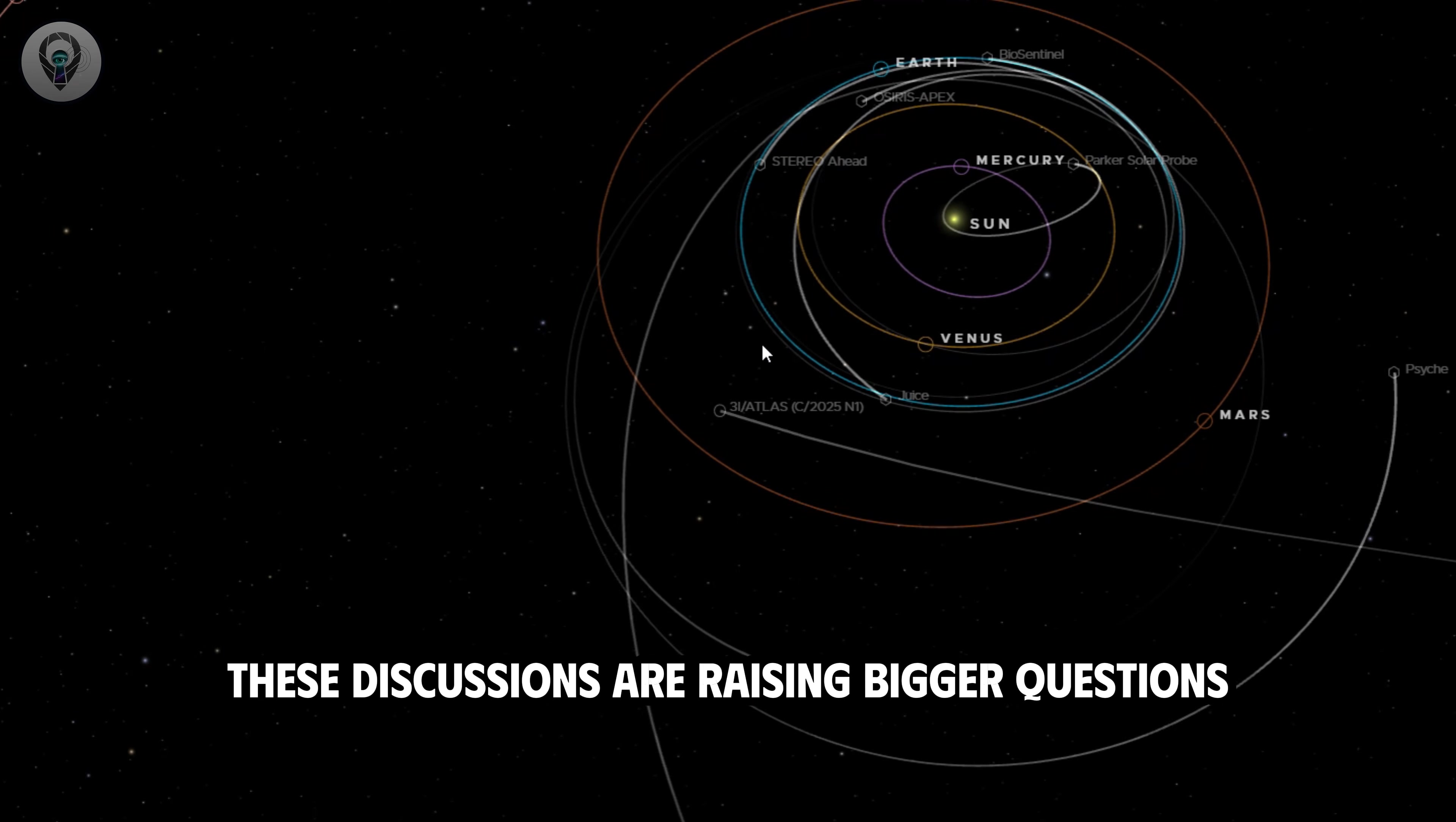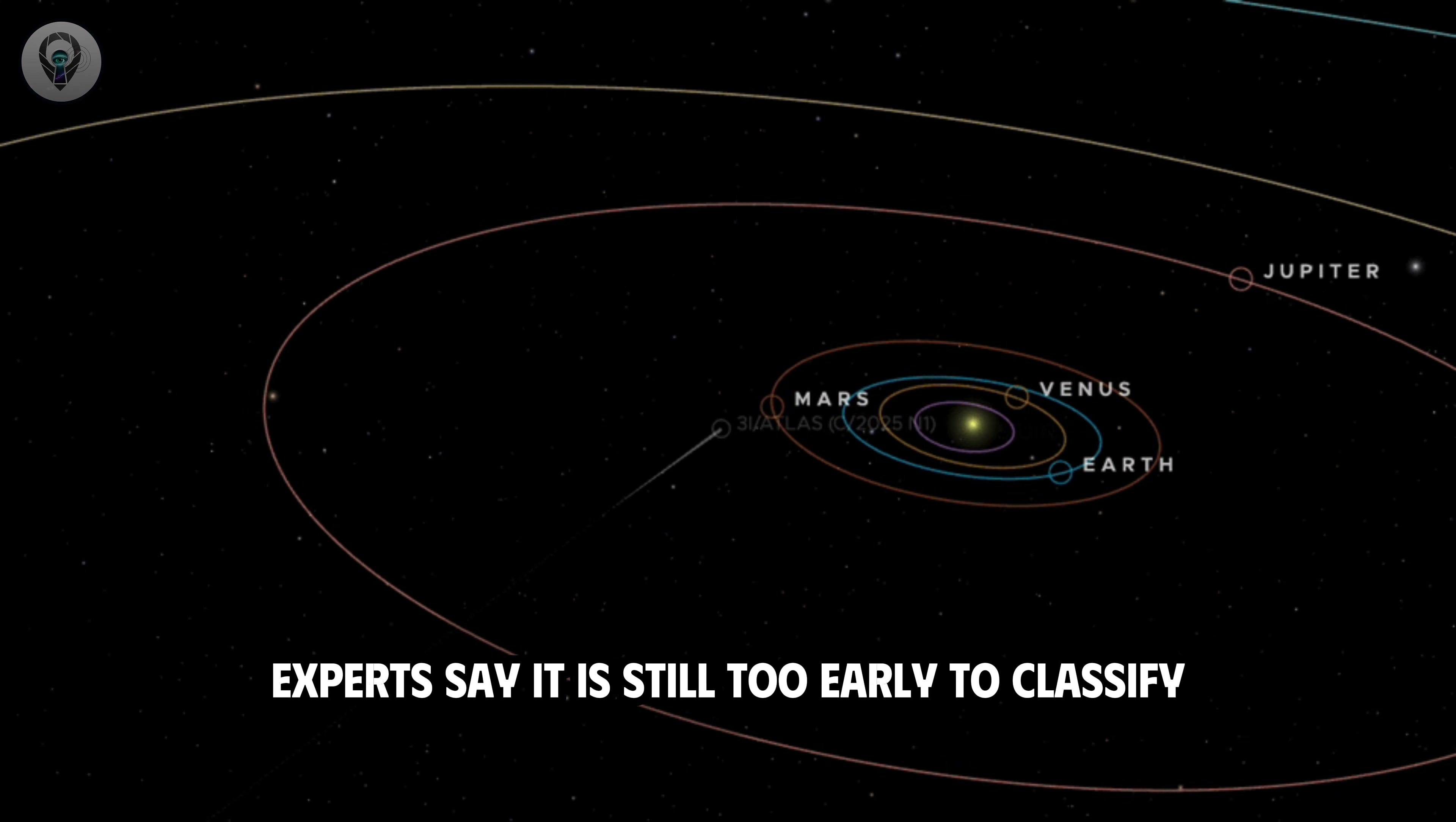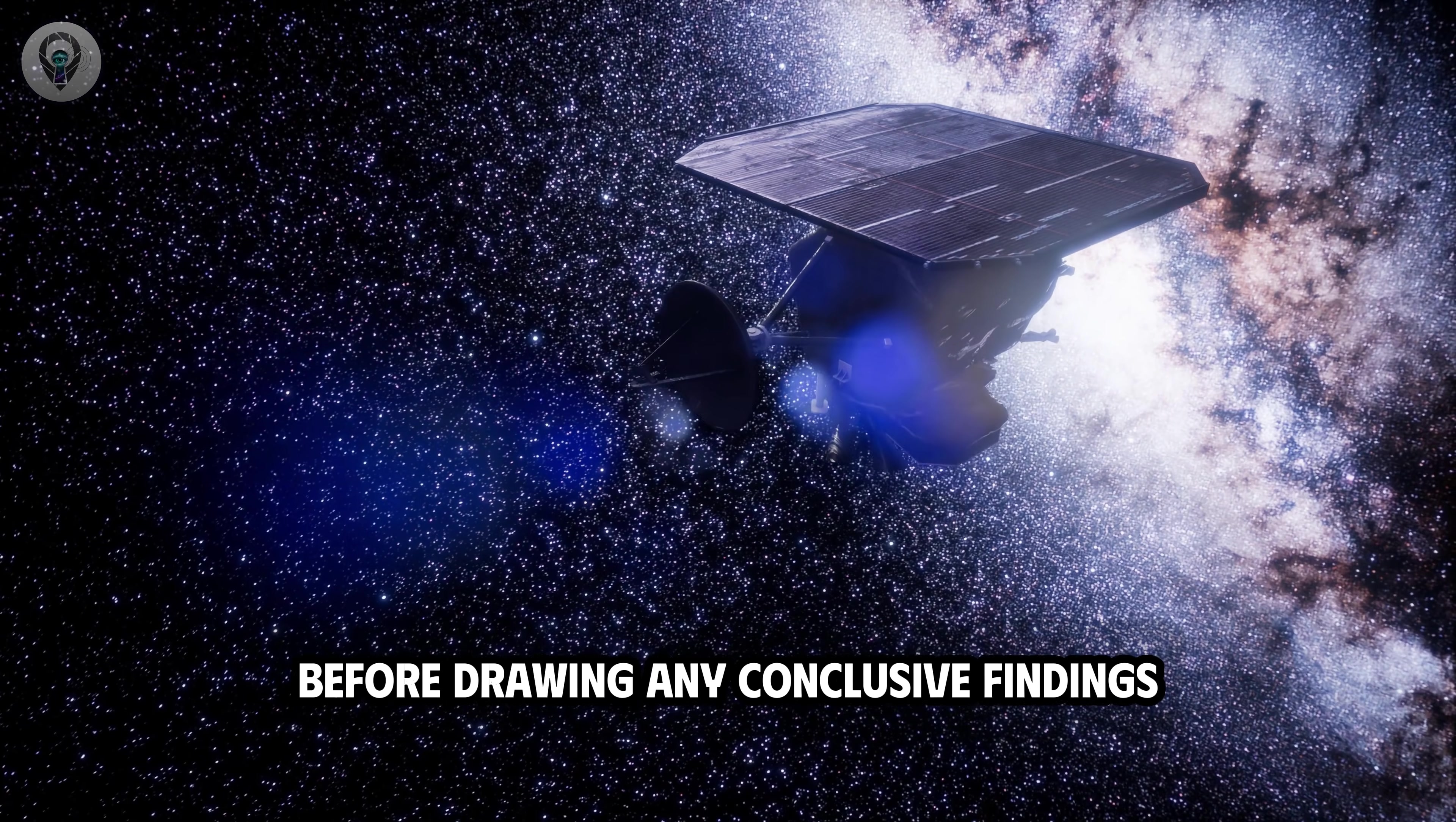Nevertheless, these discussions are raising bigger questions, not only about the nature of an interstellar object, but also about how humanity perceives its place, priorities, and responsibilities in a universe far larger than we are accustomed to. The question of whether this is a technologically advanced extraterrestrial object remains unanswered. Experts say it is still too early to classify this object on a scale from completely natural to showing signs of technological advancement, as Three-Eye Atlas is currently in its most data-gathering phase as it approaches Earth. Scientists anticipate needing several more weeks, possibly even until early next year, to fully analyze the data before drawing any conclusive findings.